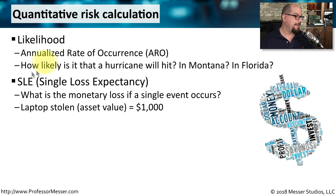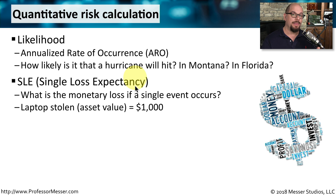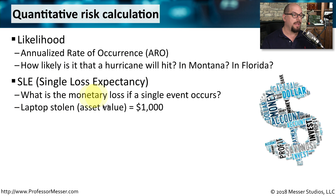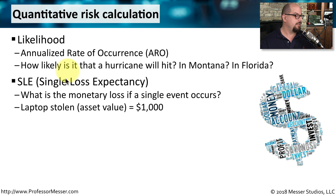Another calculation that's important is the SLE, or the Single Loss Expectancy. So if this single event occurs — if a hurricane comes through, if a laptop gets stolen — there's a particular cost associated with that. You can determine what this SLE might be by looking at the risk itself. So if a laptop is stolen, the asset value for replacing that particular asset is $1,000. That is the cost of our Single Loss Expectancy.